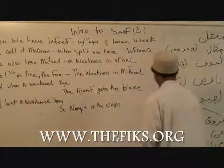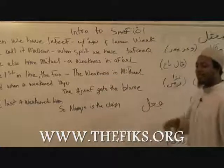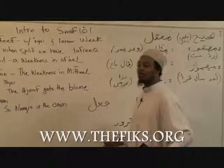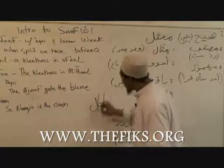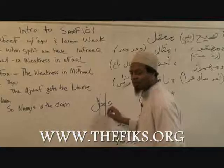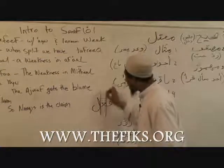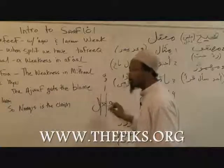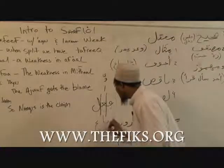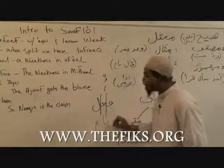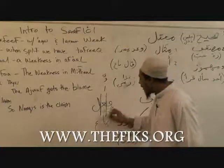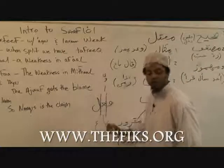The fa'alun ajwaf — ajwaf means your stomach, the insides of you, and it means the insides is hollow. The a'in of the letter fa'ala is the jawf, the inside of it. When the a'in of the word has an alif, a wa, or a ya in it, then we know that fa'alun is ajwaf. For example, ba'a — the ba is the fa'a of the letter, the alif is the a'in of the letter, and the 'ain is the la'am of the letter. Since the a'in of the letter has an alif, and alif is one of the three weak letters, this would be considered a fa'alun ajwaf.